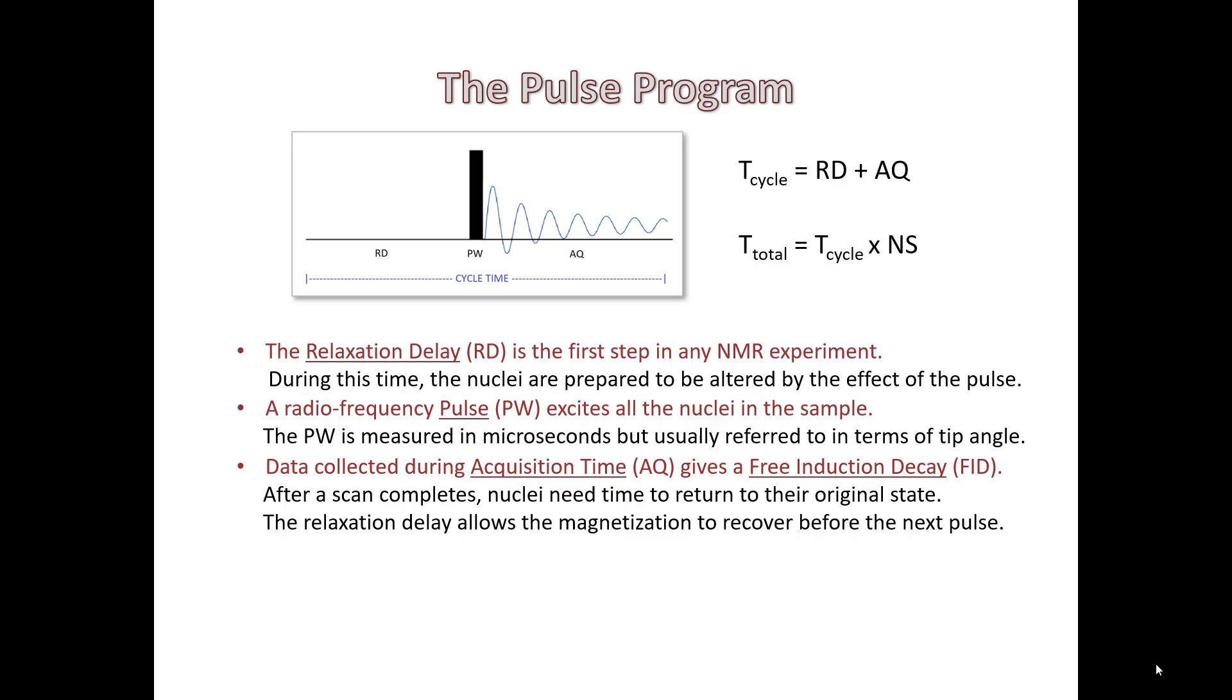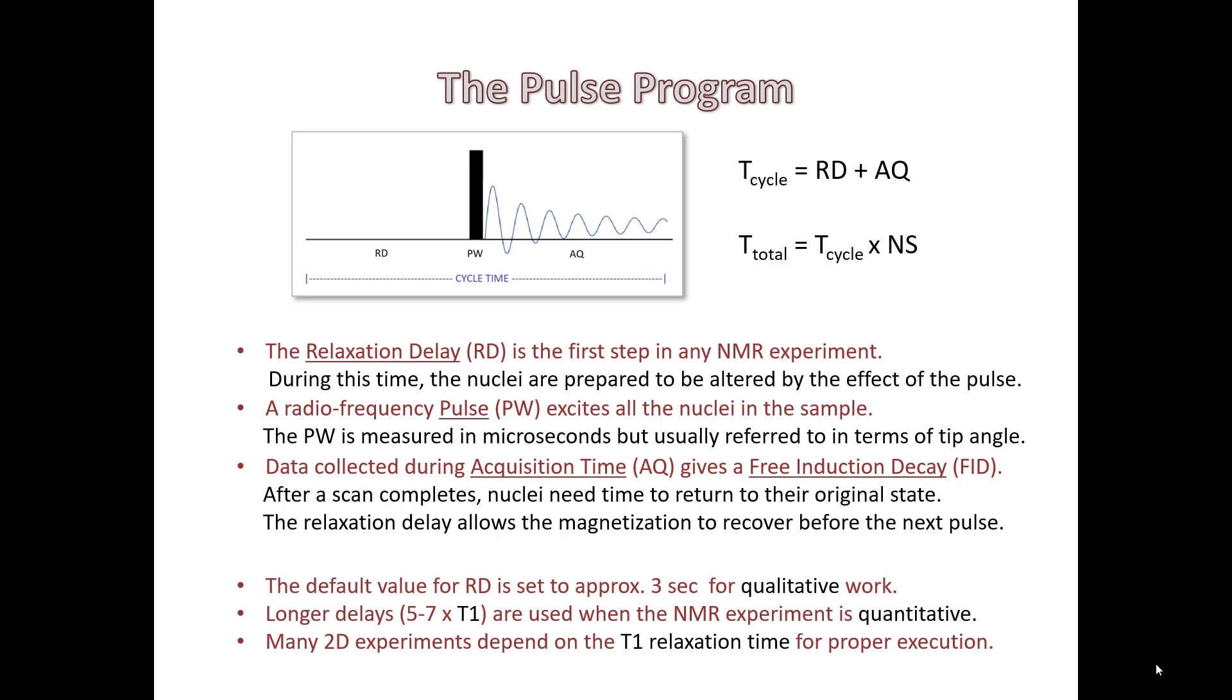If you're doing a multiple scan experiment, the cycle time times the number of scans will give you the total time for the experiment. When doing qualitative work, the relaxation delay doesn't matter quite as much. You're just looking for chemical shifts, coupling constants, multiplicity information such as doublets, triplets, quartets, and so on.